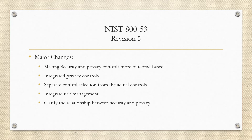Next, integrated privacy controls. They took the privacy controls that used to live in Appendix J of Revision 4 and incorporated them into a new privacy family and the existing program management family. Some of these controls were also incorporated into security controls throughout Revision 5, allowing them to serve as both security and privacy controls and achieving more efficient implementation. You don't have to go to Appendix J anymore — they're all built into the new Revision 5 publication.